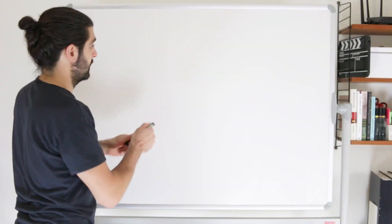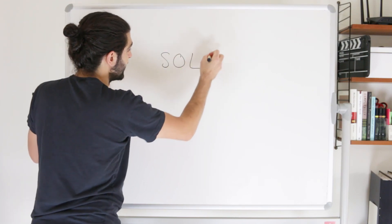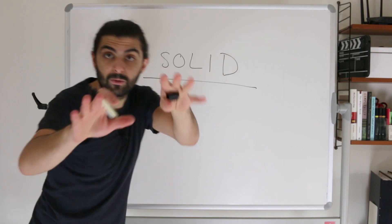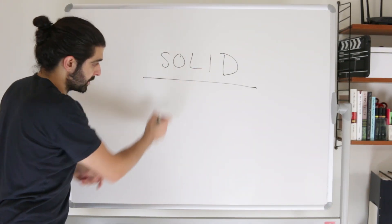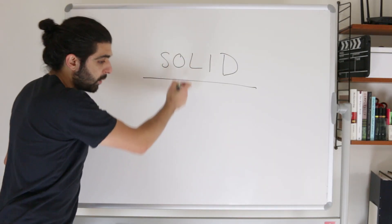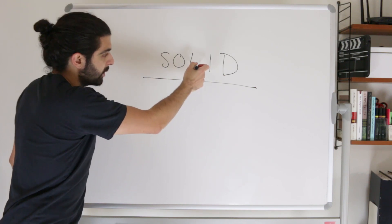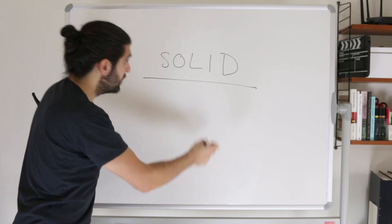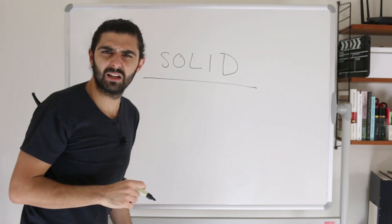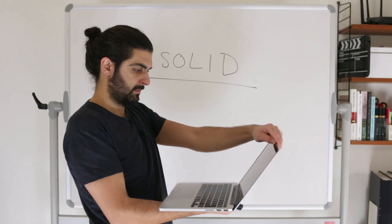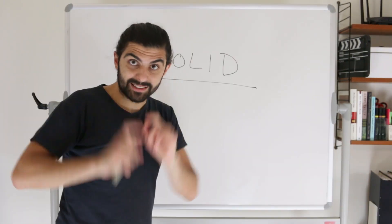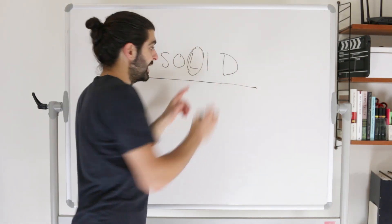Welcome to this series on the SOLID design principles — S for Single Responsibility Principle, O for Open/Closed Principle, L for Liskov Substitution Principle, I for Interface Segregation Principle, and D for Dependency Inversion Principle. Today we're going to talk about the L: the Liskov Substitution Principle.